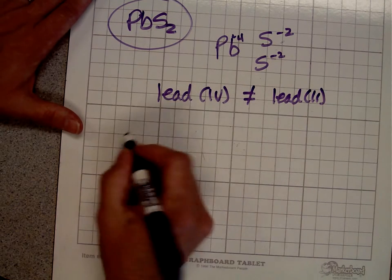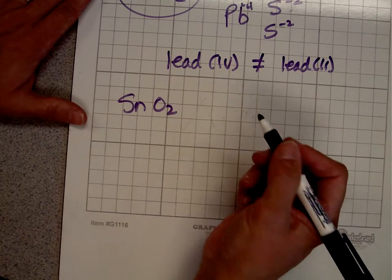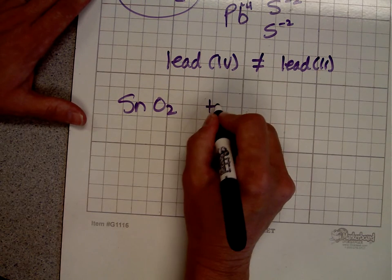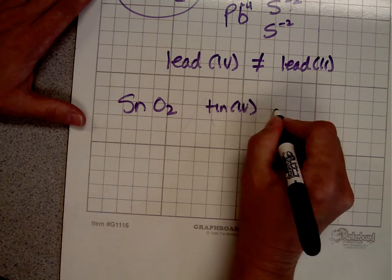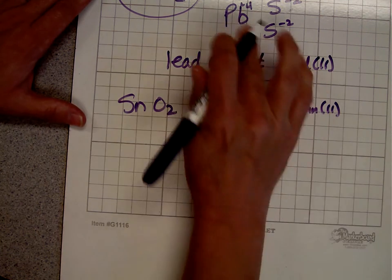And Kendra's other question was about this tin oxide. And again, same thing. She wants to know why is it tin four and not tin two. And it's for the same reason as up here.